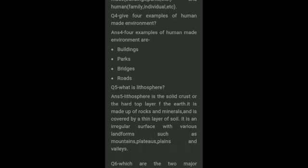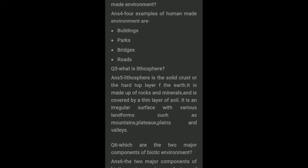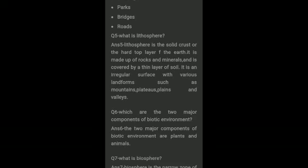Moving towards the fourth question: give four examples of human-made environment. Here are four examples: buildings, parks, bridges, roads. These all things are made by humans only.